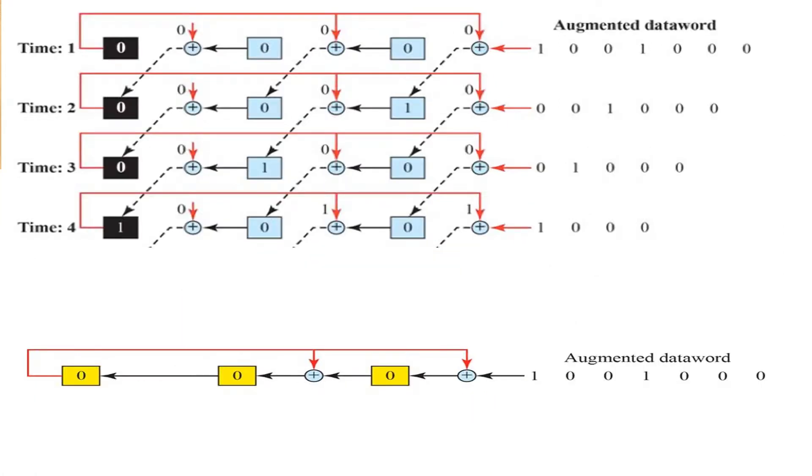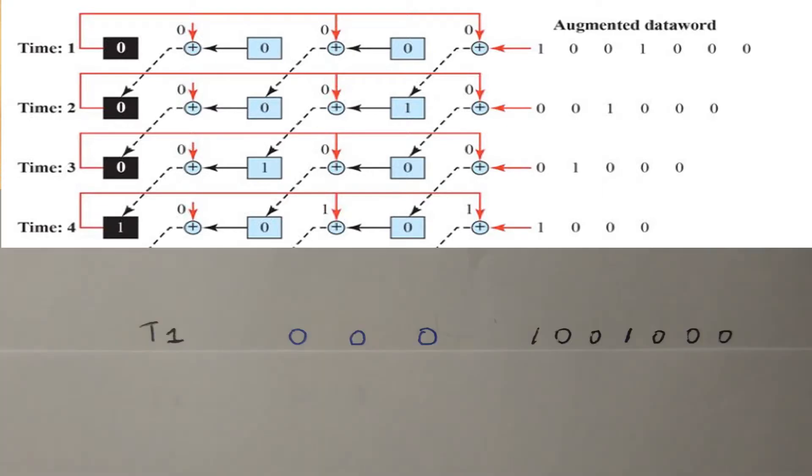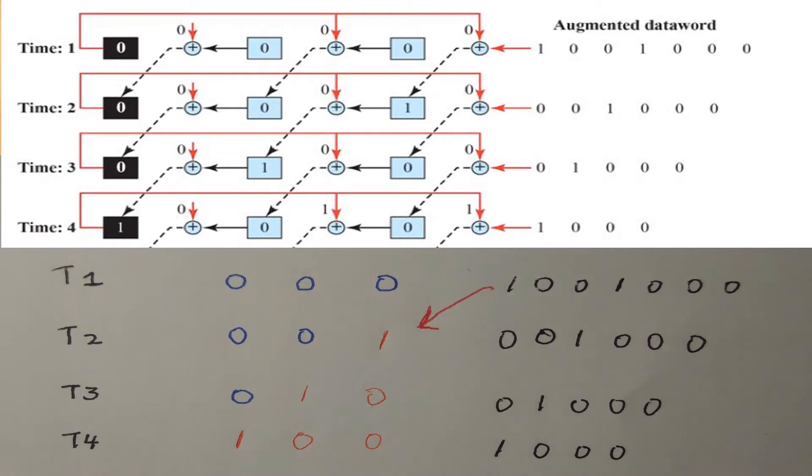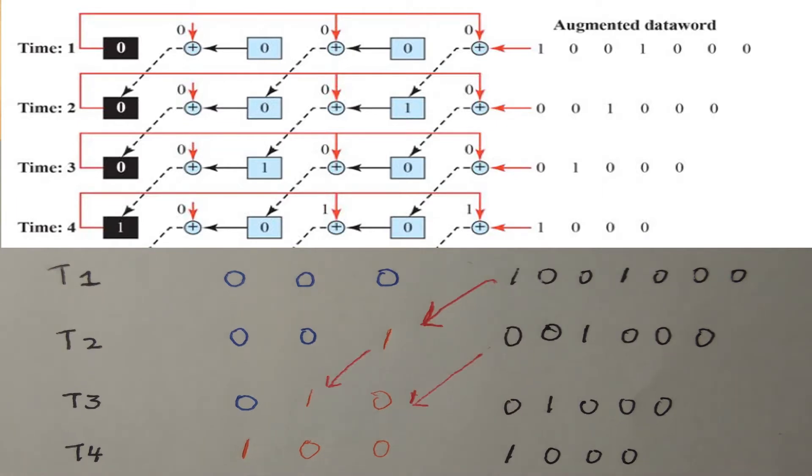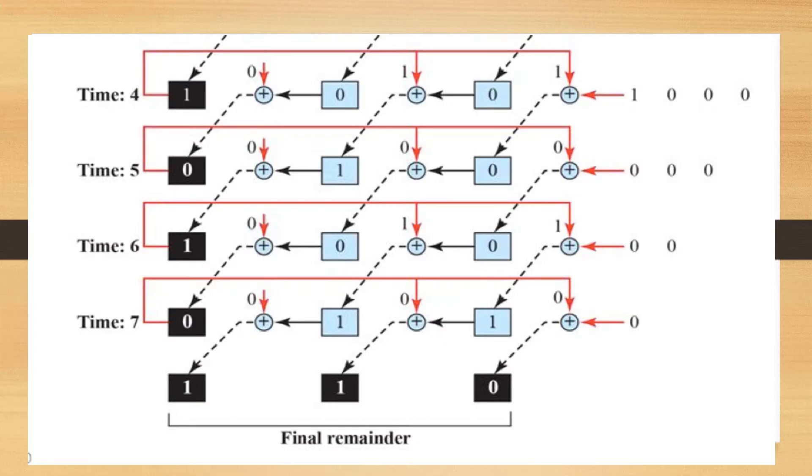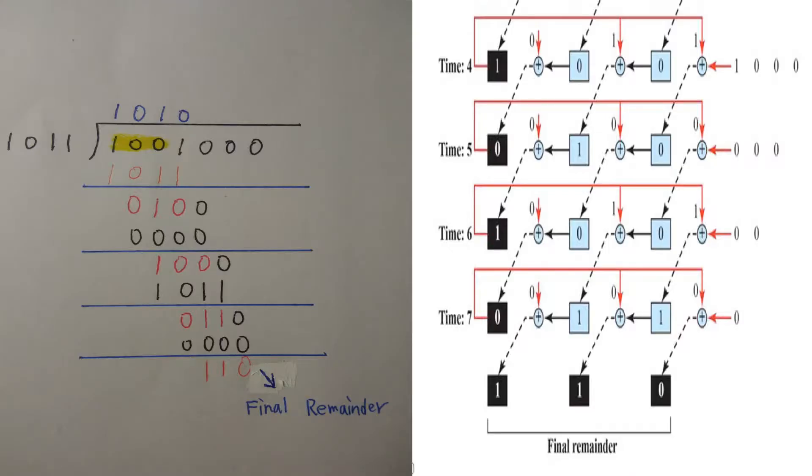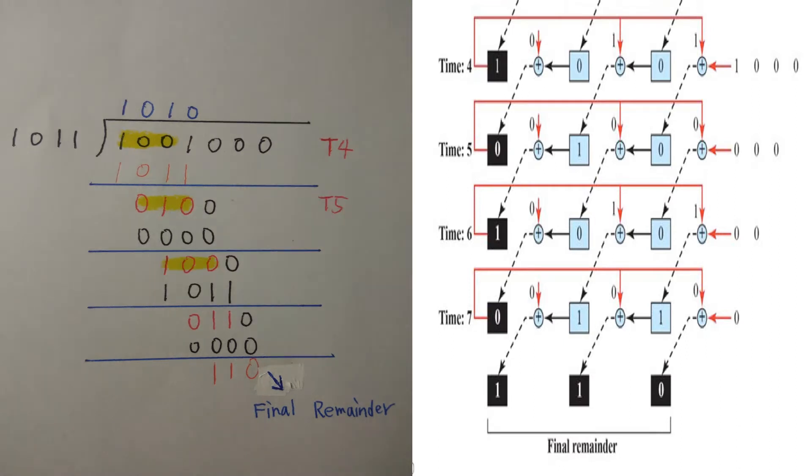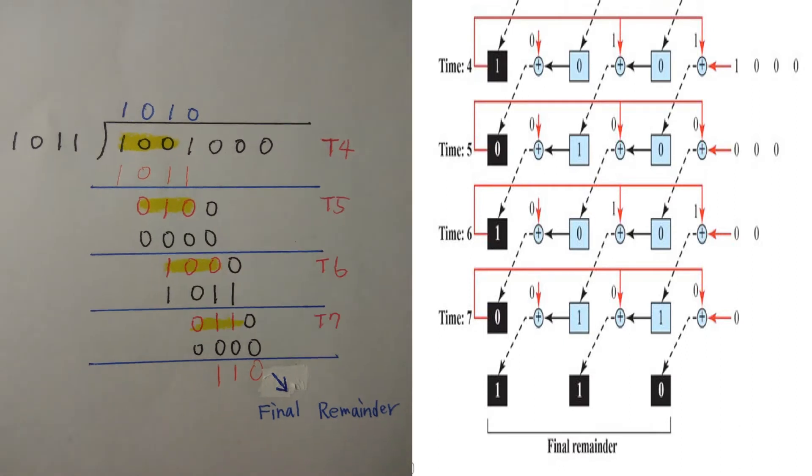The first bit of augmented dataword will be pushed into the remainder register one by one. Let's focus on T1 to T4 first. Now let's focus on T4 to T7. We observe that the calculation process is matched to the CRC encoder T4, T5, T6, T7. Here is an example for T4 and T5.